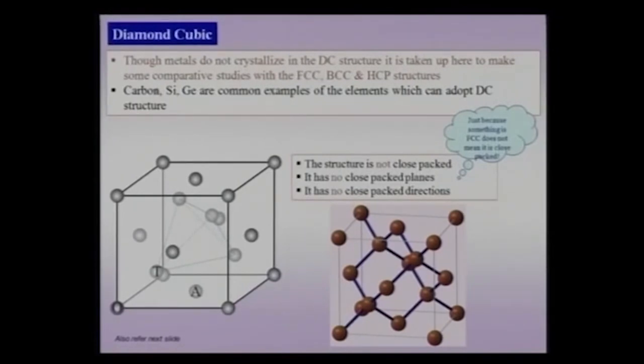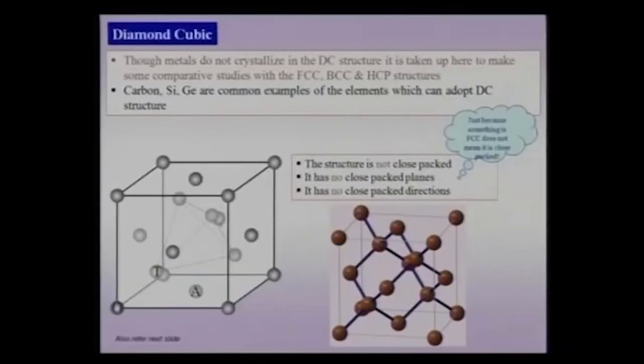An important point: just because a crystal belongs to the FCC lattice, it need not be a close-packed crystal. The diamond cubic structure also illustrates that it does not have a true fourfold axis and yet comes under the cubic class, which implies that a true fourfold rotation is not a requirement of the cubic crystal system. That is another important aspect.